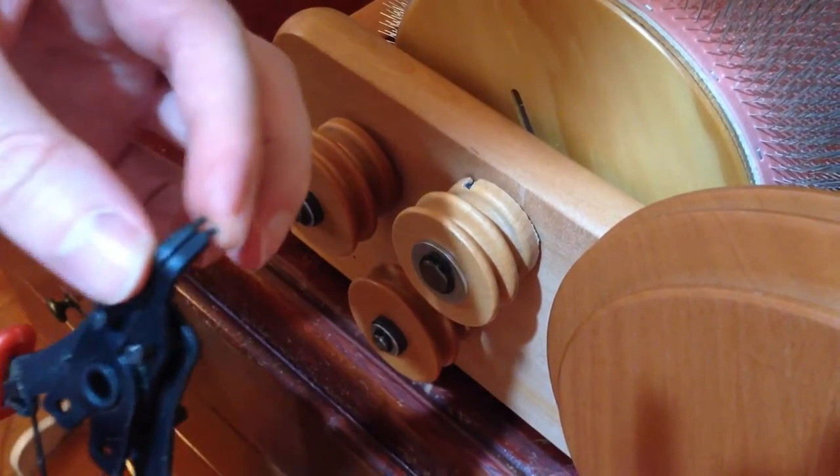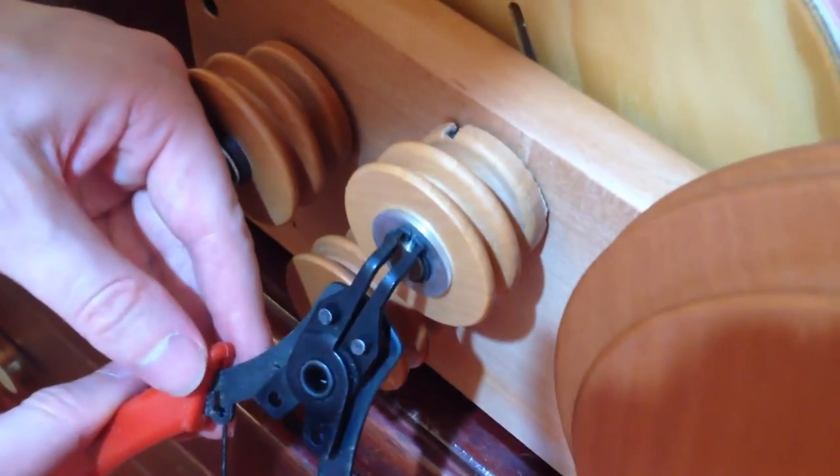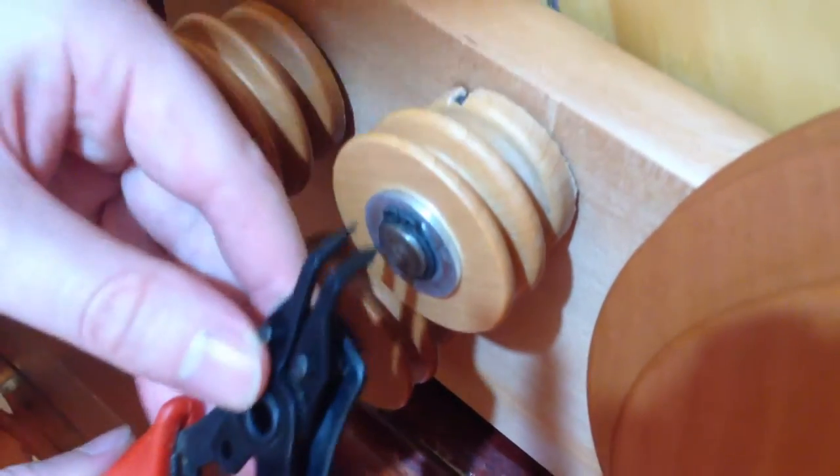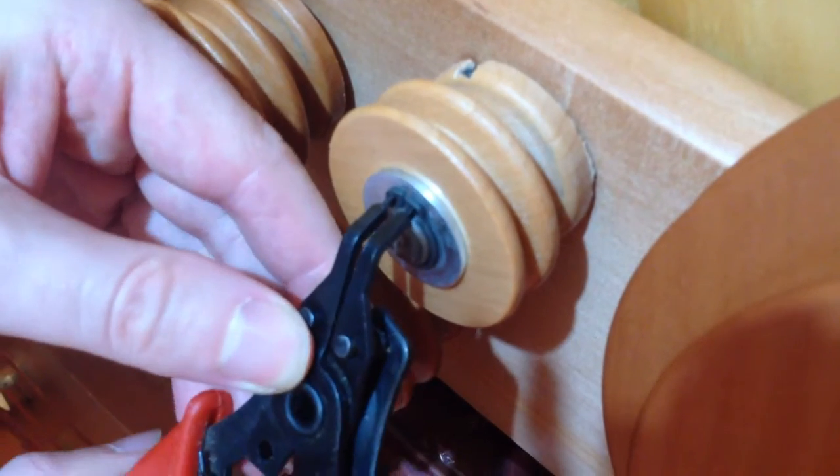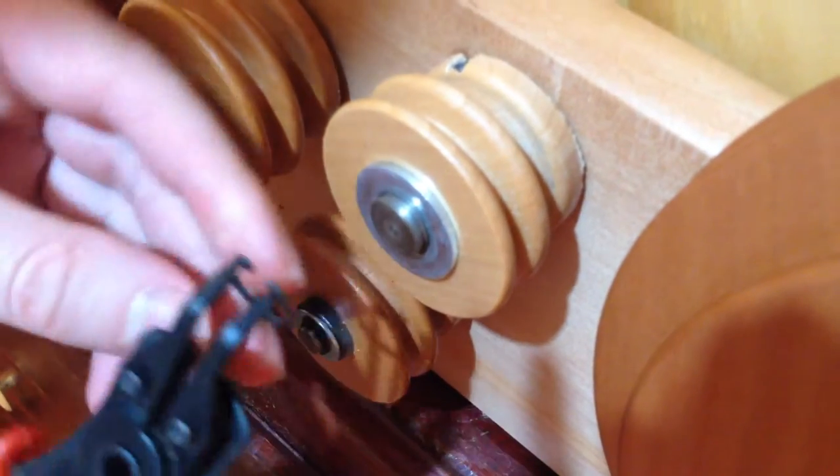Then place the two little tips inside the holes on the circlip itself. Then just squeeze very gently to open it just enough to get the circlip off.